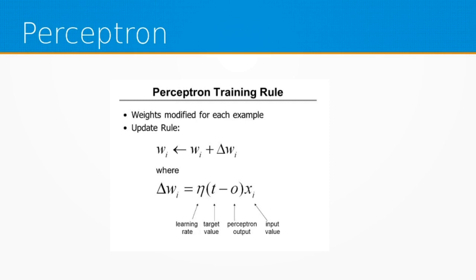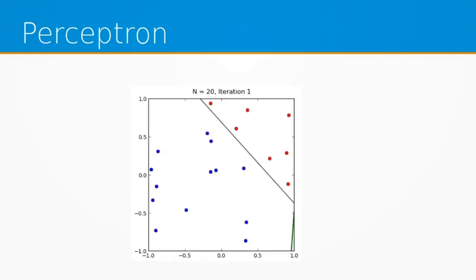That's how the gradient is set for all the weights. To calculate that gradient, we randomly select one x from all of the samples — that changes the output. There are many ways of calculating the gradient: batch gradient descent, mini-batch, and stochastic. Here we're using stochastic gradient descent.